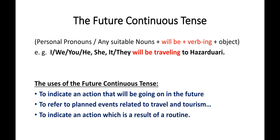The moment you listen to the term 'continuous tense,' the first thing you have to remember is the -ing form of a verb. The -ing form of the verb in grammar is known as the present participle. The present participle form of the verb is used in the future continuous tense with the helping verb 'will be.'